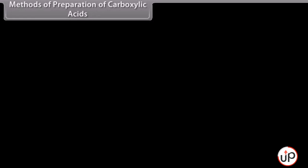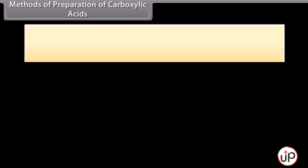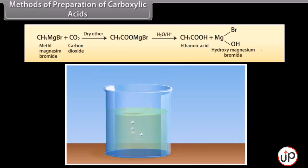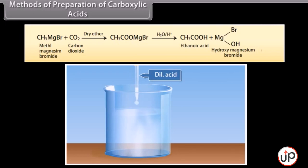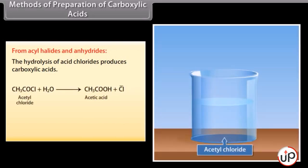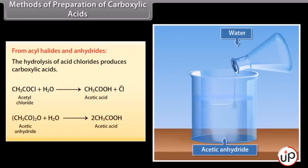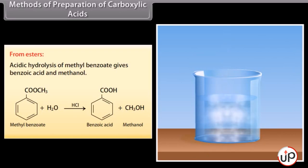From Grignard reagents: Grignard reagents when treated with carbon dioxide in the presence of dry ether form salts of carboxylic acids, which give carboxylic acids after acidification. Methyl magnesium bromide reacts with CO2 in dry ether to form ethanoic acid after acidification. From acyl halides and anhydrides: hydrolysis of acid chlorides and anhydrides produces carboxylic acids. Hydrolysis of acetyl chloride and acetic anhydride both produce acetic acid. From esters: acid hydrolysis of methyl benzoate gives benzoic acid and methanol.